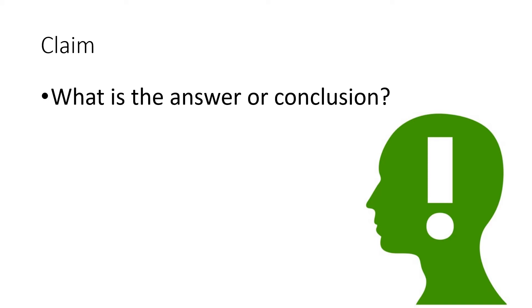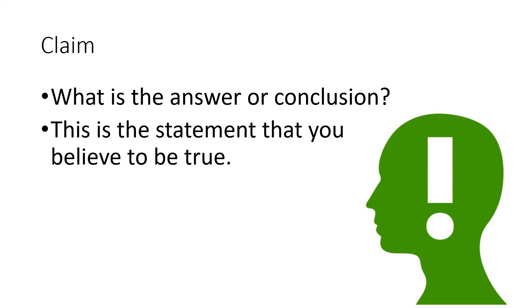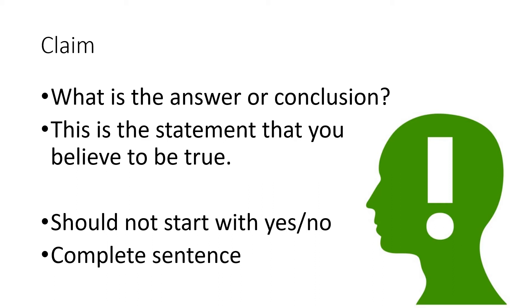The claim is the first part we're going to talk about. This is usually going to be the answer to a question or a conclusion you've made about something. It's a statement that says what you think is true. This should be a complete sentence — it should not start with yes, no, or because. An example of a claim is: Minnesota has four seasons. Another one is: the Earth revolves around the Sun. These are all answers to questions or statements that we believe to be true.